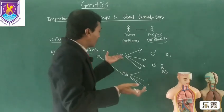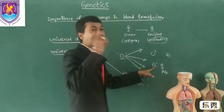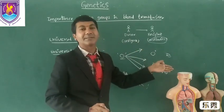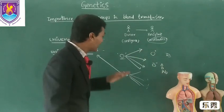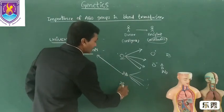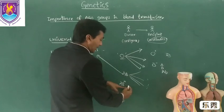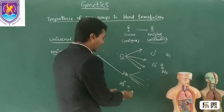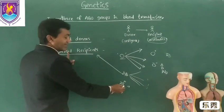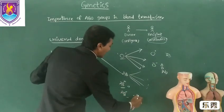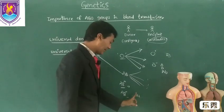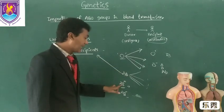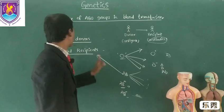O is known as universal donor, but O negative is the actual universal donor, because anti-D is also absent in O negative. Coming to AB positive — AB positive people are not having any antibodies like A antibodies, B antibodies, or RH antibodies, so AB positive are the universal recipients. Whereas AB negative is not, because they are having the RH antibody in their body. So among AB blood group people, AB positive are the universal recipients.